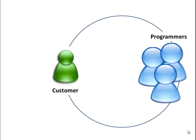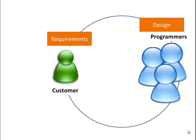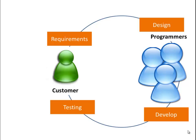Let's look at how software gets built. In the most simple case, a customer explains his or her requirements to the development team, who then design and develop the software. The software, once completed, is made available to the customer, who then tests it and finally deploys the application so that others can begin to use it.